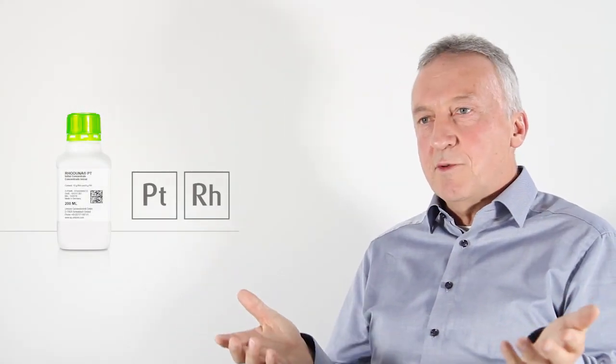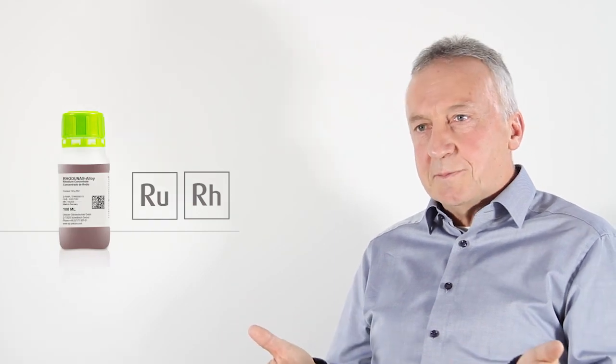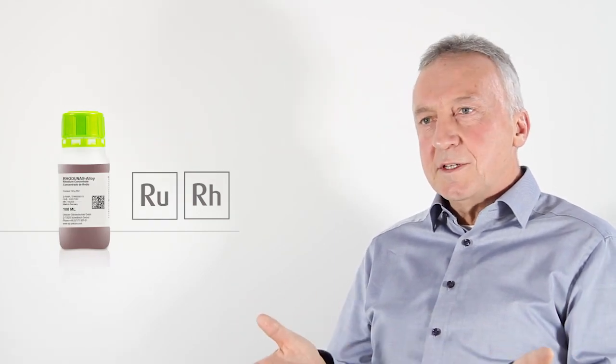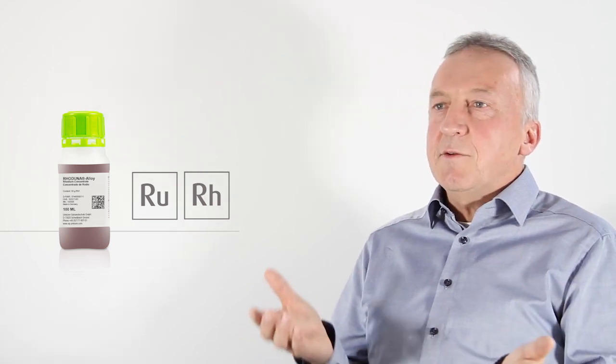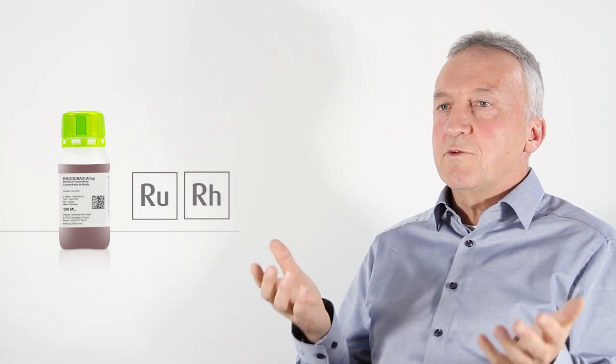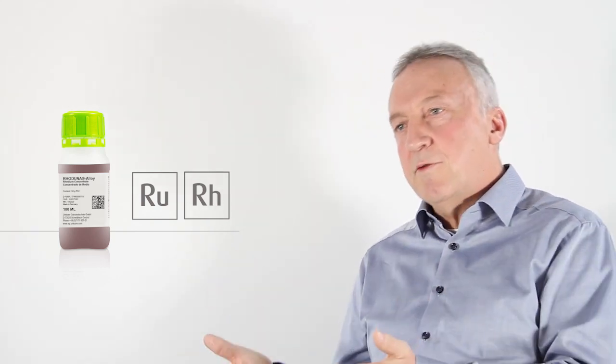Unfortunately the platinum price was increasing as well, so we moved to rhodium-ruthenium. The alloy composition rhodium to ruthenium is flexible, but for jewelry 75% rhodium and 25% ruthenium fits best for maximum cost saving with best performance.